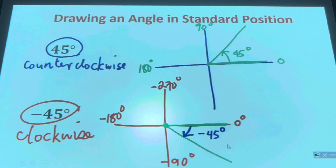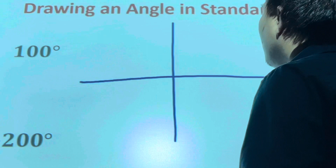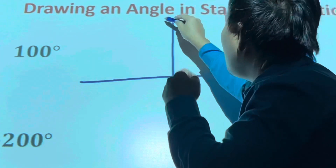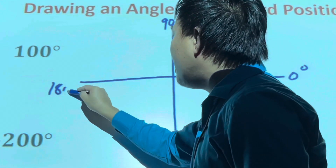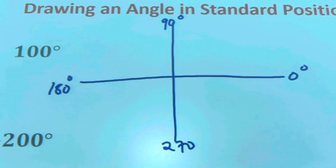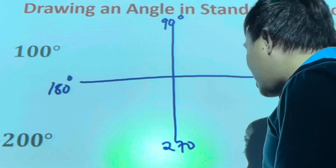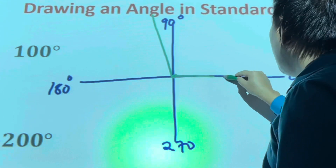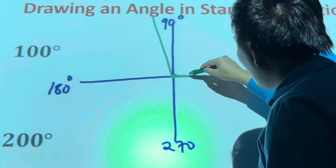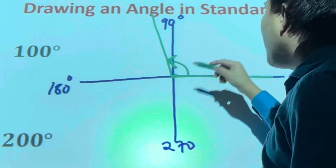The two previous angles were given in degrees. Next example: 100 degrees. Draw the Cartesian plane — since it's positive, we go counterclockwise. Zero degrees is here; 90 degrees is here, 180 degrees, 270 degrees. For 100 degrees, we just need 10 degrees past 90. So from the point of origin along the positive x-axis, the angle extends counterclockwise to approximately 100 degrees, with an arrow indicating counterclockwise direction.